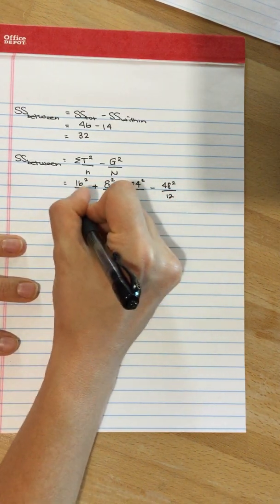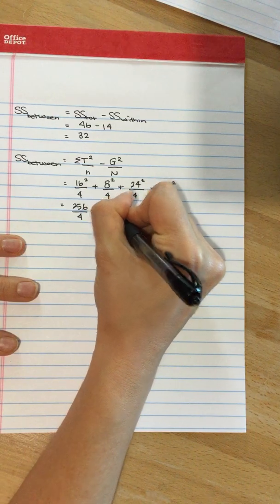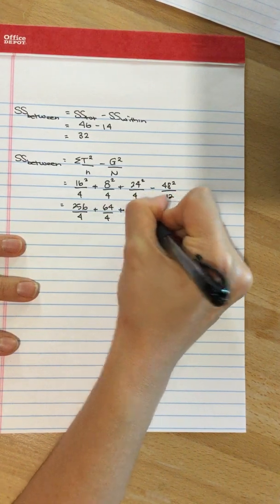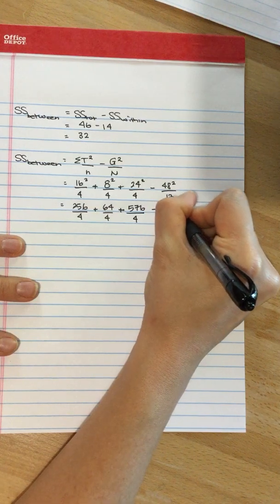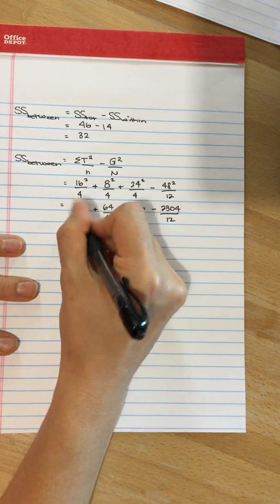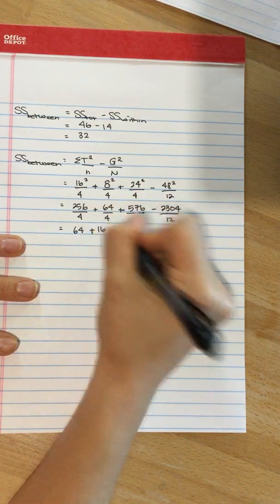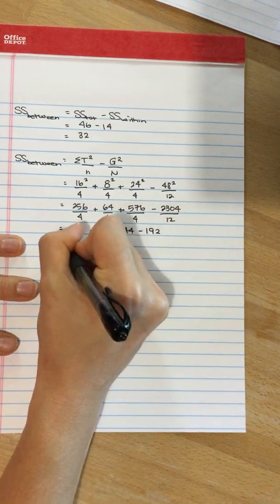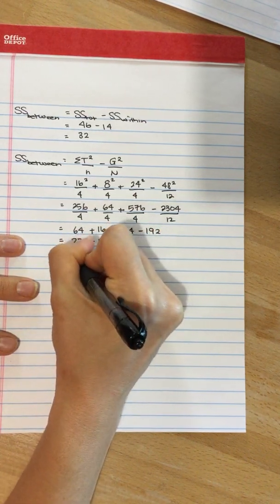So this is 256 divided by 4, plus 64 divided by 4, plus 576 divided by 4, subtract 2304 divided by 12. This is 64 plus 16 plus 144 subtract 192. That's 224 subtract 192, which is 32.